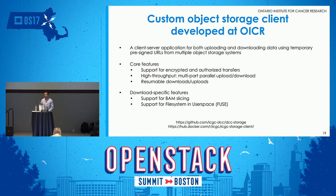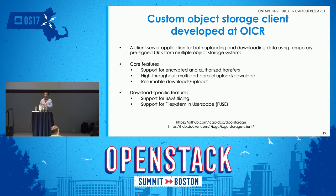The temporary URL is valid for a limited time. The tool supports S3, Swift, and Azure, and has features like resumable downloads and multi-parallel uploads and downloads. Also BAM slicing — BAM is a file format used in genomics that allows requesting just a portion of the BAM file; you can say 'give me just chromosome 3, this section' instead of downloading the entire file, and feed it a list of multiple objects to get just that section from all of them.